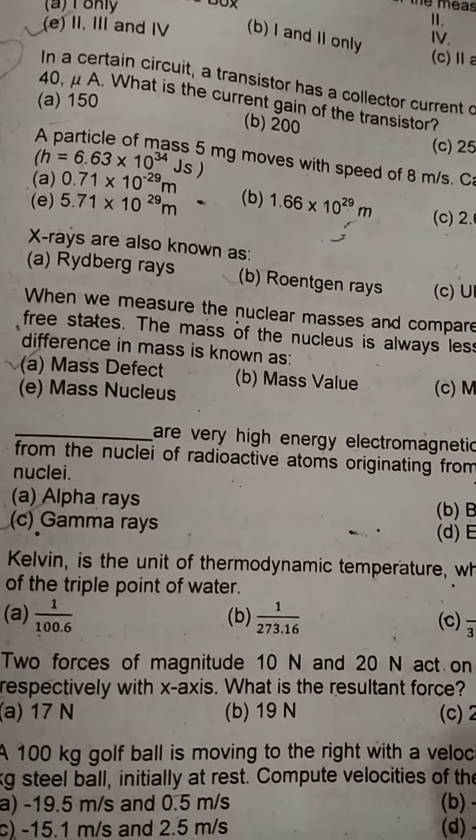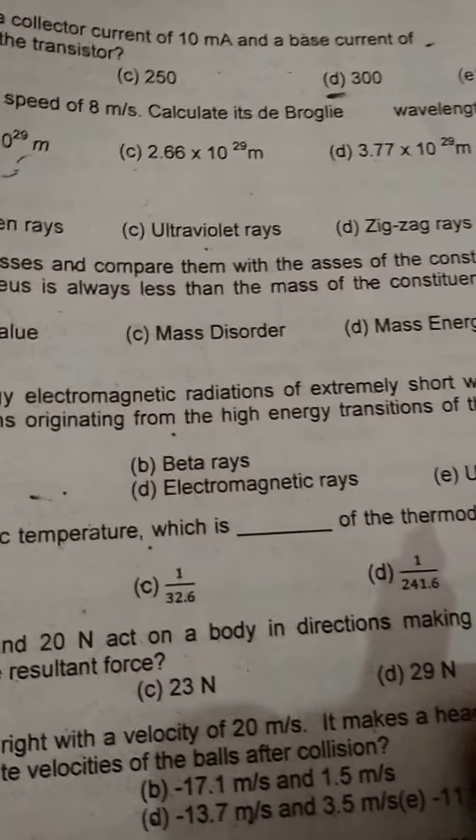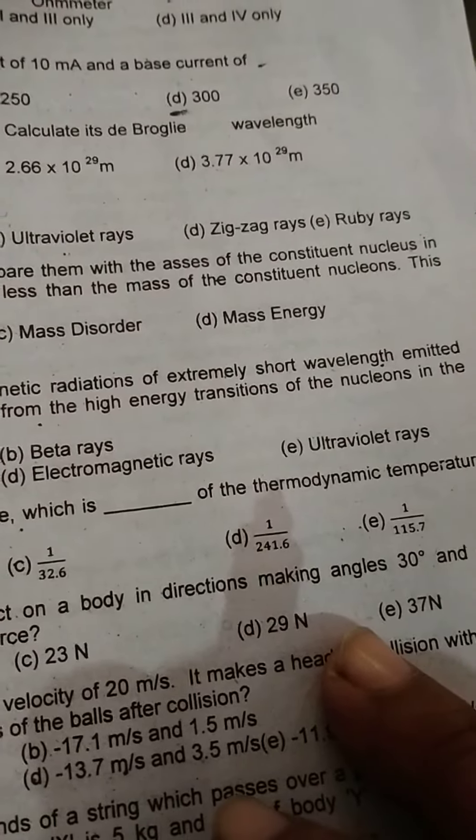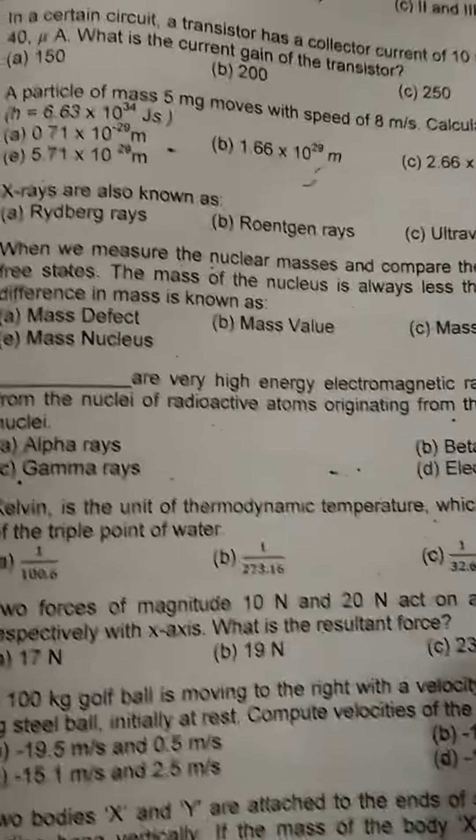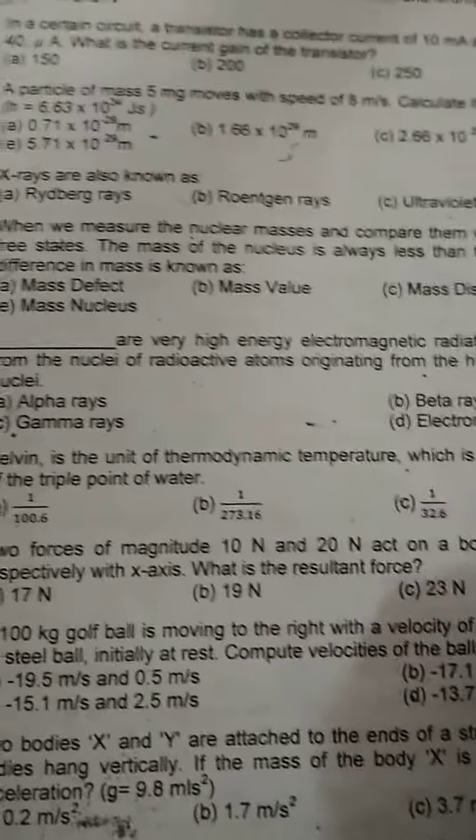This is a great question. When we measure the nuclear masses and compare them with the masses of the constituents of the nucleus in free state, the mass of the nucleus is always less than the mass of the constituent nucleus.